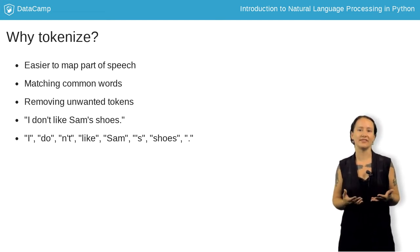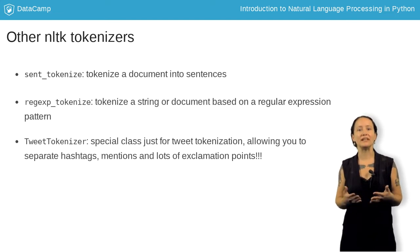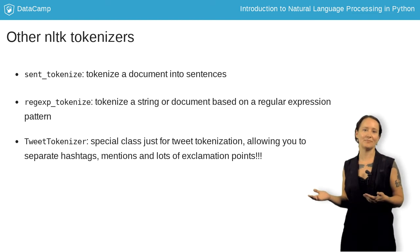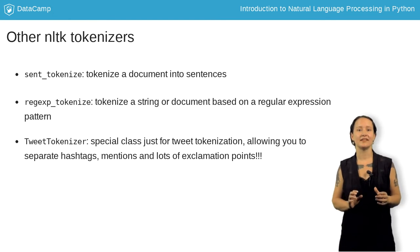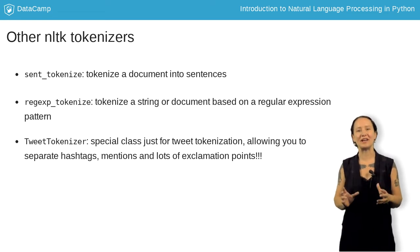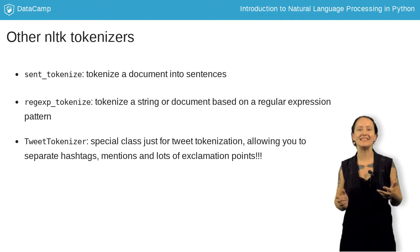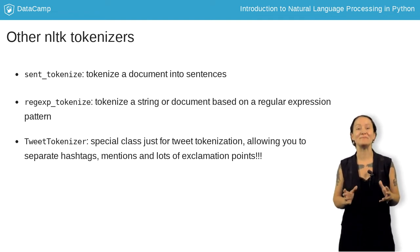Beyond just tokenizing words, NLTK has plenty of other tokenizers you can use, including these ones that you'll be working with in this chapter. The sent_tokenize function will split a document into individual sentences. The regex tokenizer uses regular expressions to tokenize the string, giving you more granular control over the process. And the tweet tokenizer does neat things like recognize hashtags, mentions, and when you have too many punctuation symbols following a sentence.